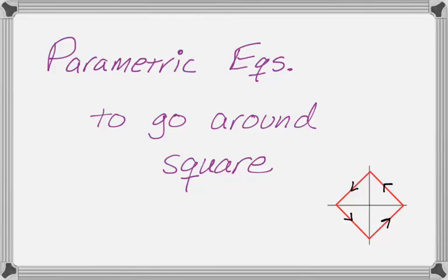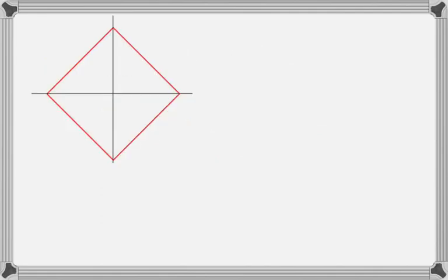In this video we are going to talk about how to write parametric equations to go around a square. The square is that little picture down in the bottom corner there. Here's our square and we're going to go counterclockwise around it.